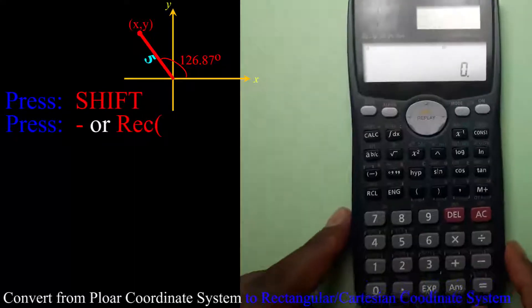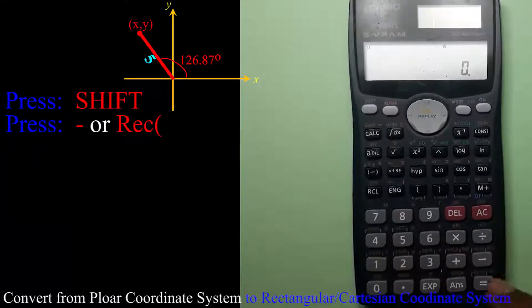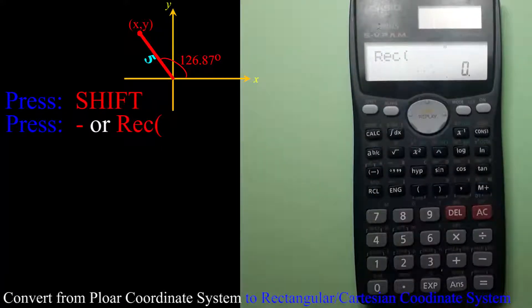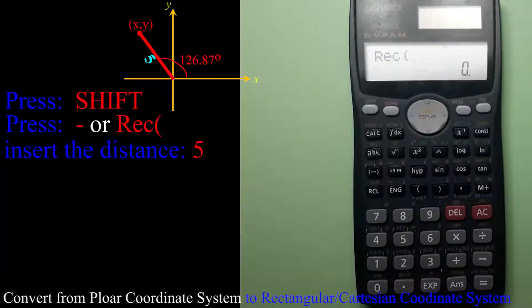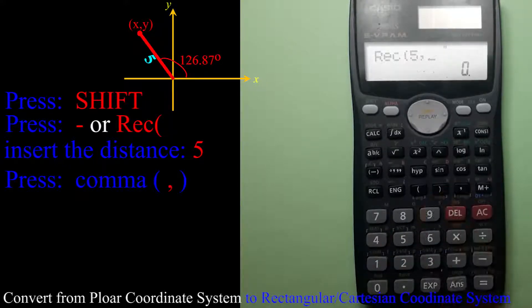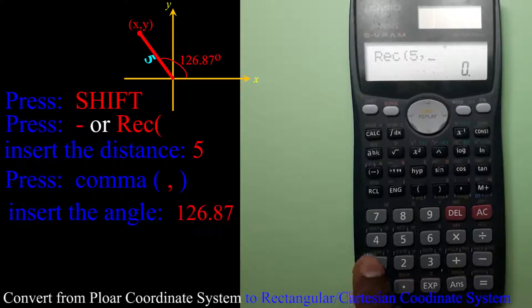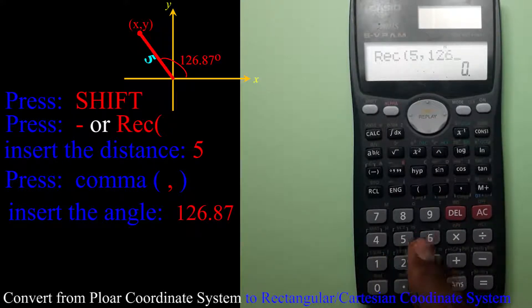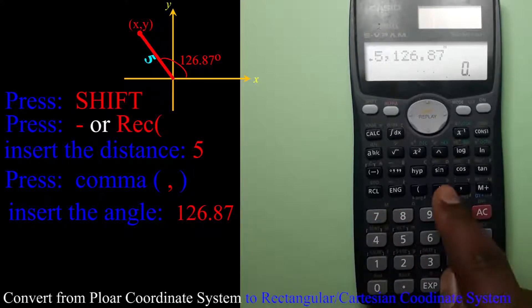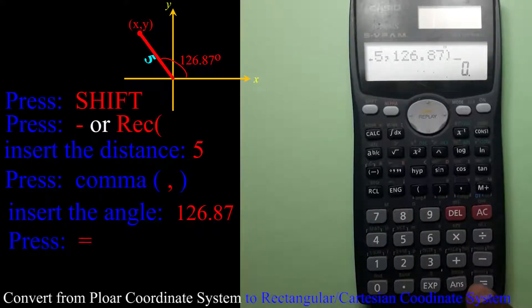So I will say REC, then I will get this thing. I will enter the distance from the origin to the final point, that is 5, then comma, then the angle 126.87.